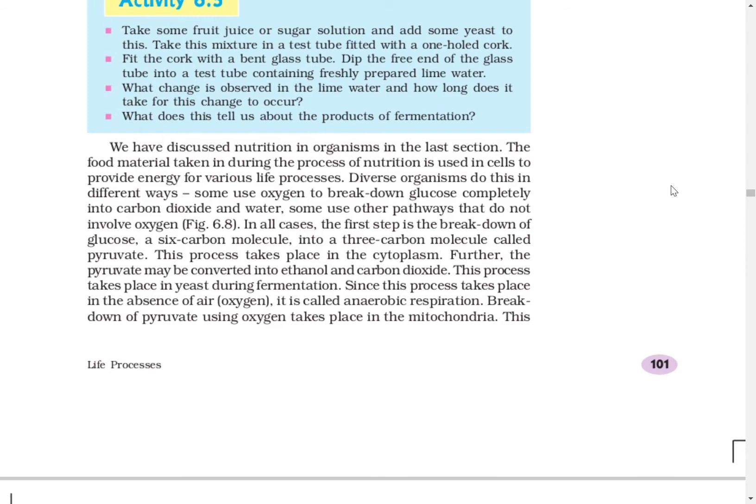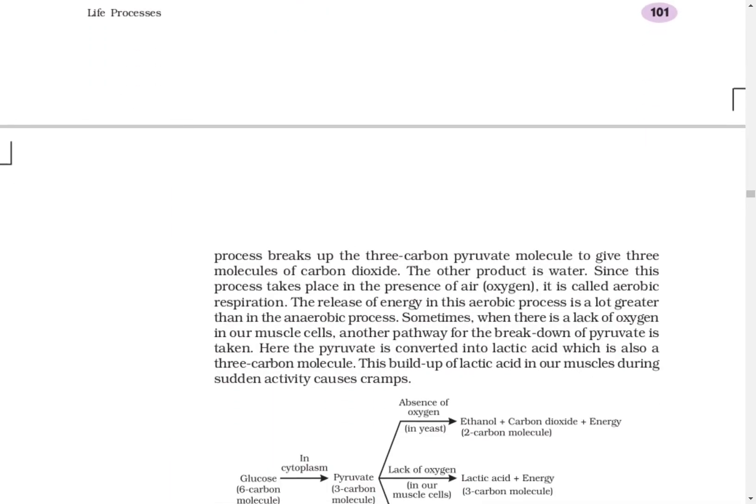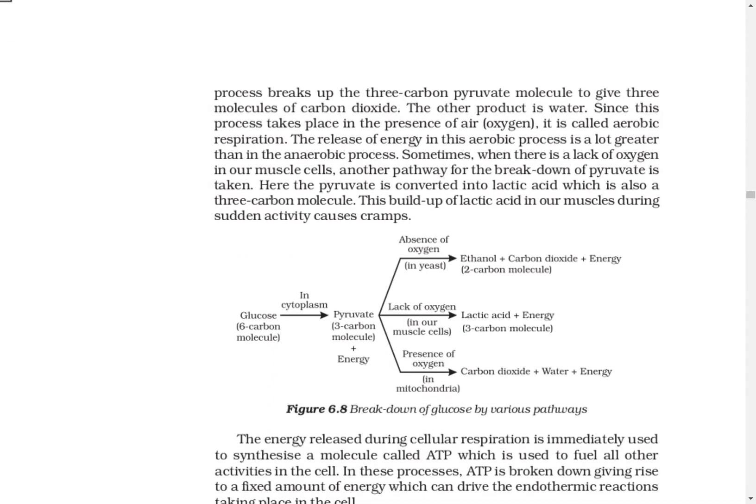In different types of cells, energy production happens in different ways, as shown here. Glucose breaks into pyruvate in the cytoplasm. If there is absence of oxygen — as in the example of yeast — then ethanol, carbon dioxide, and energy are produced. If there is presence of oxygen, as in the case of mitochondria shown at the bottom, then carbon dioxide, water, and energy are produced.